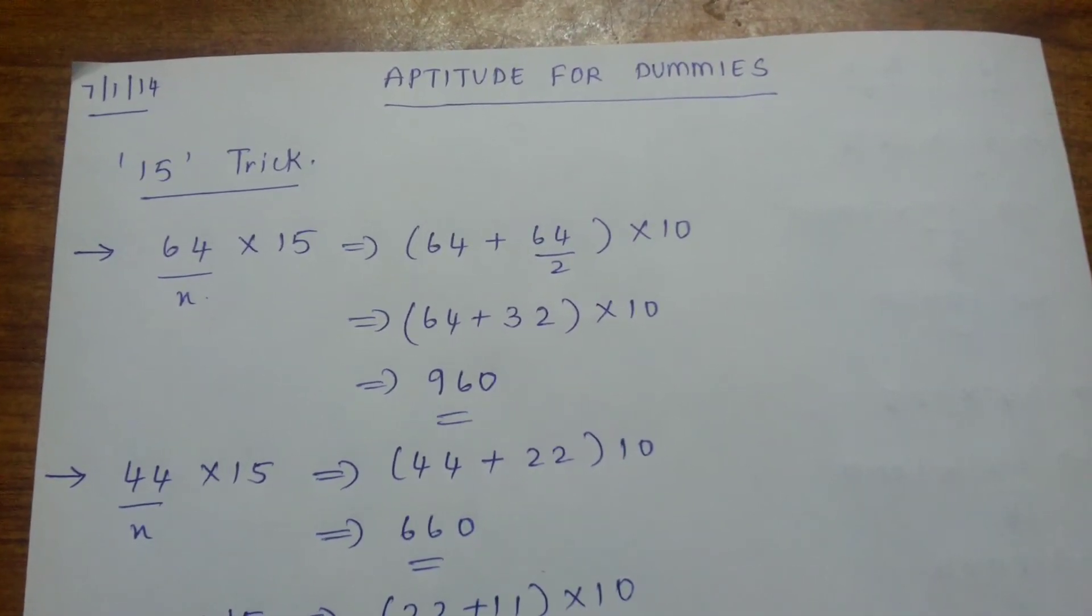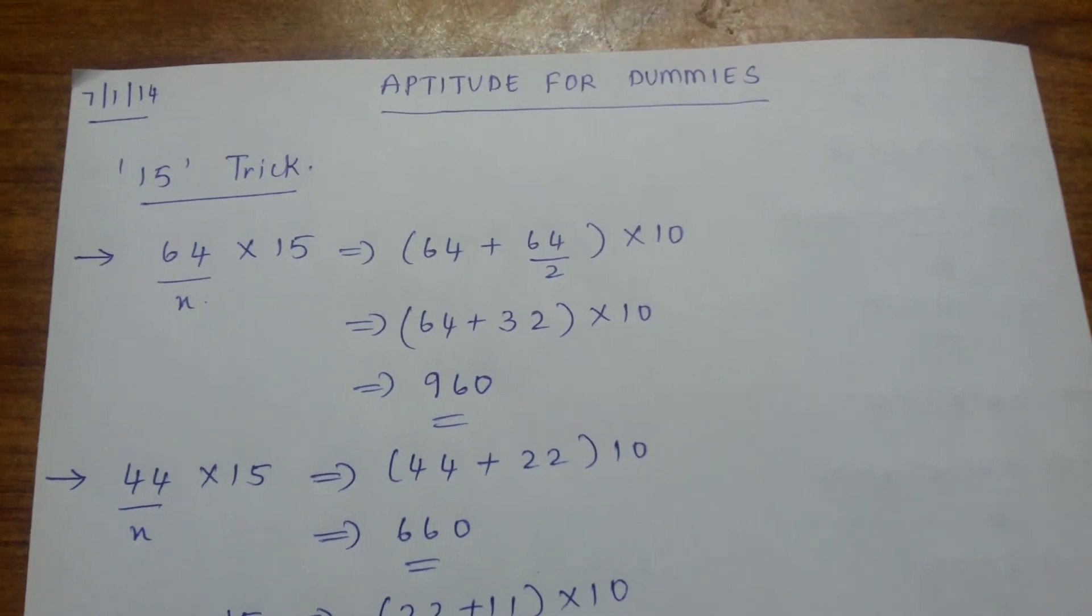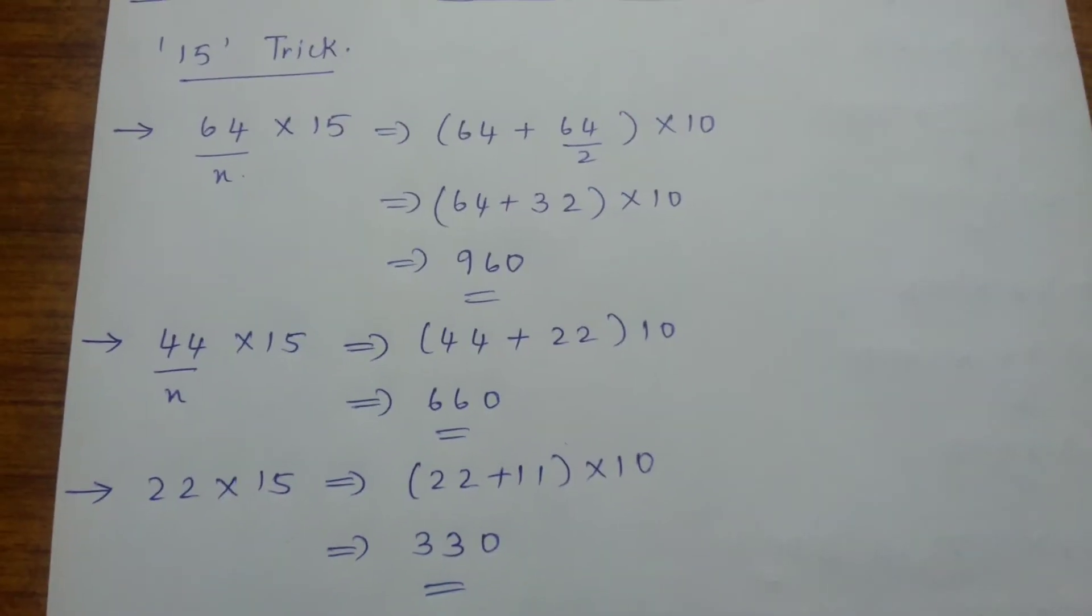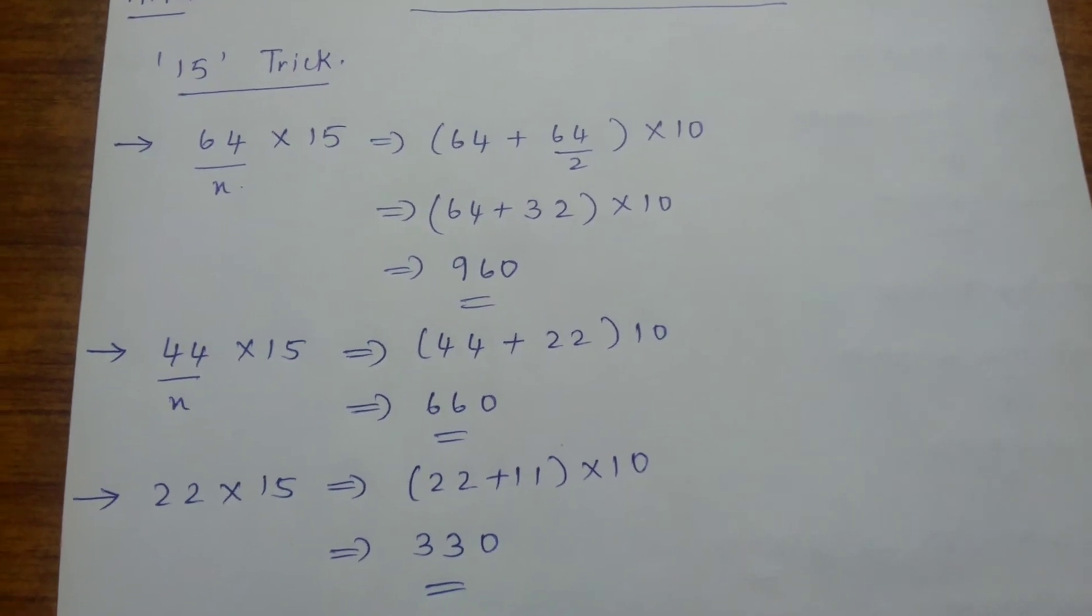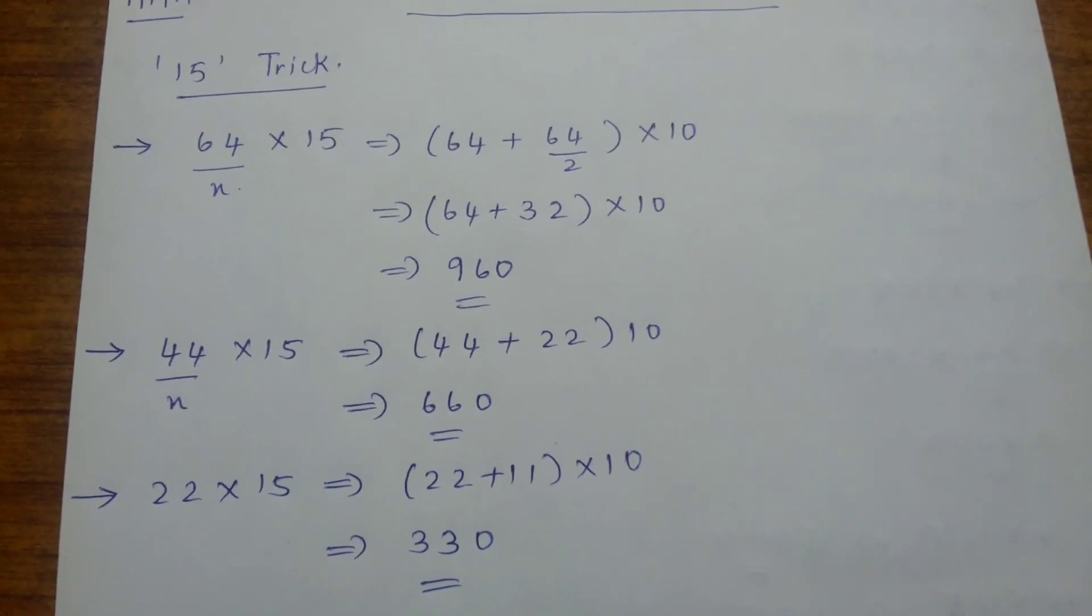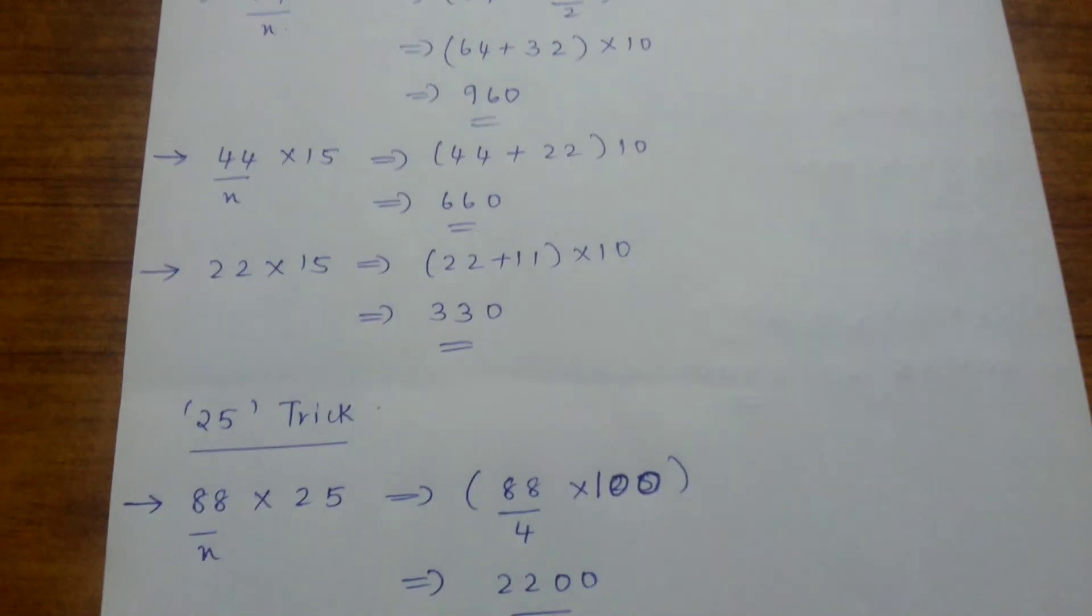Few more examples: 22 into 15. Half it - 22 half is 11, added to 22. 22 plus 11 into 10 equals 330. Now coming up to the 25 trick.